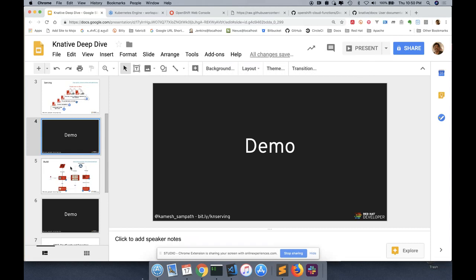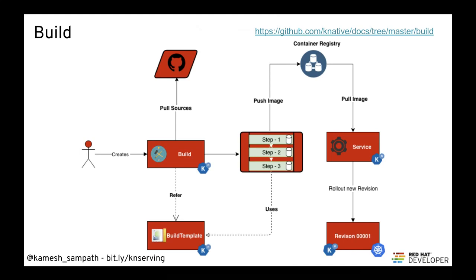Let me get back to my slides. The Build component takes care of the entire build lifecycle of your serverless deployment. The user creates a build, it pulls resources from GitHub, and there's a build template — think of it like a Jenkins job template. The build uses this template to run multiple steps, then pushes the built container to the container registry, and the service picks it up and deploys it. Previously we did a Docker build and pushed manually; now the service references the build and it all happens automatically.